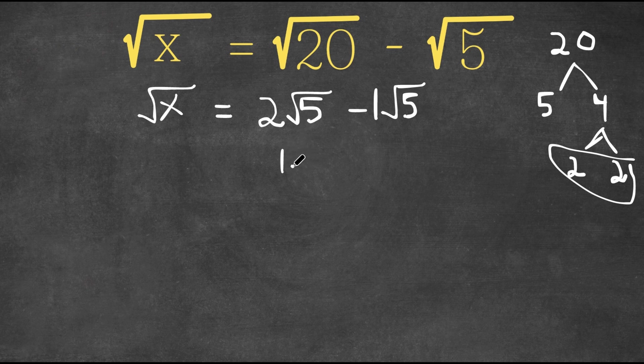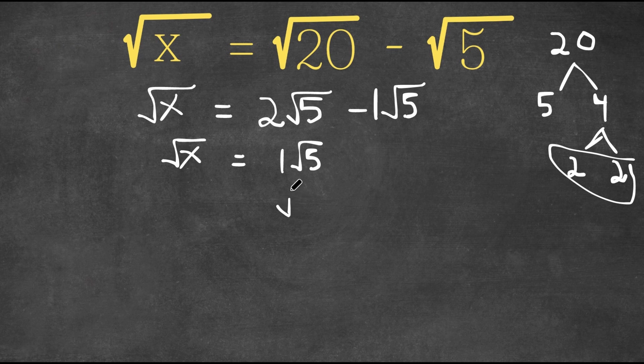So now we have 1 and we keep the radical. So 1 root 5 equal to the square root of x. And 1 root 5 is the same thing as just square root of 5.